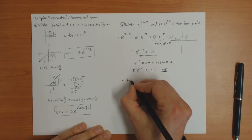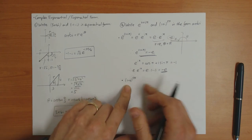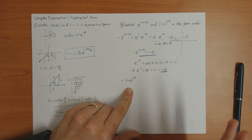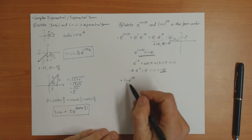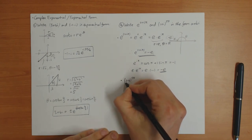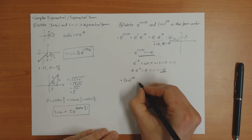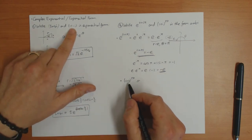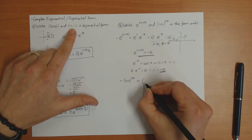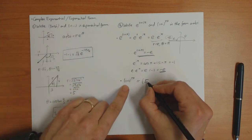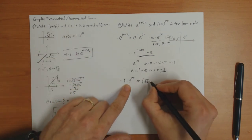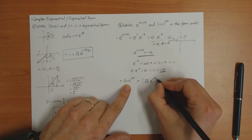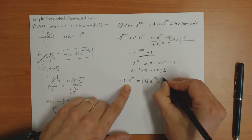The next one is 1 plus i to the power of 50. You could just multiply this out 50 times, but obviously that's the stupid way because it will take a long time. It's much easier if you put it into complex exponential form. In complex exponential form, 1 plus i is the square root of 2 times e to the i pi by 4.